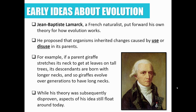Jean-Baptiste Lamarck was a French naturalist who started out as a botanist. He proposed that organisms inherited changes caused by use or disuse in their parents. Using fossil evidence, he argued that life was not fixed — when environments changed, organisms had to change to survive. If an organism began to use an organ or structure more than it had in the past, it would develop more throughout its lifetime, and then the offspring would also inherit that changed trait.